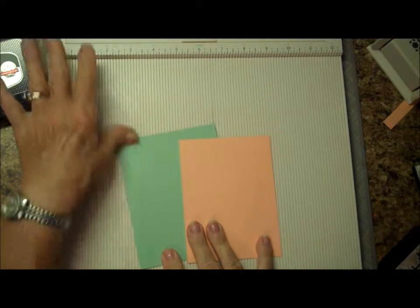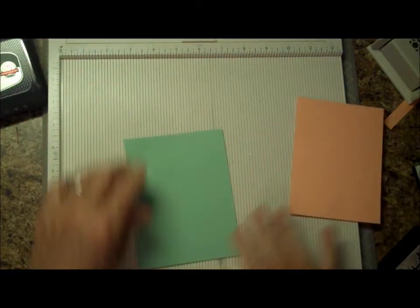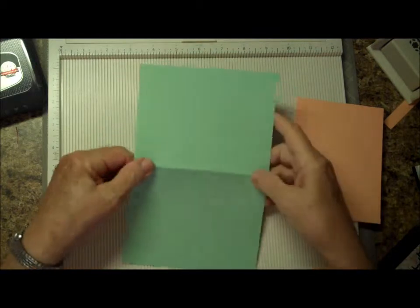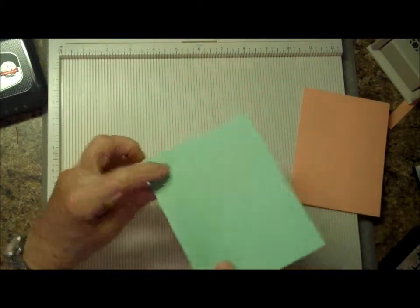So let's get started and see how we put it together. The card base is a standard A2 size. That's an 8.5 by 11 piece of paper cut in half and then scored at 4.25.